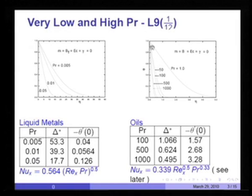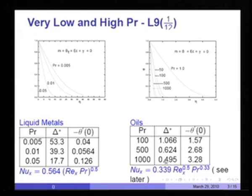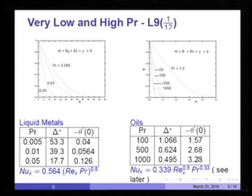On the oil side, Prandtl equal to 1 gives the reference solution of about 4.92 as the temperature boundary layer thickness. But for Prandtl numbers of 50, 100, 500, and 1000, the temperature boundary layer thickness keeps reducing. For Prandtl 1000, it is as low as 0.495, which is about 10 times smaller than the velocity boundary layer thickness of about 5. A good curve fit is Nu_x proportional to 0.339 Re_x^(1/2) Pr^(1/3).